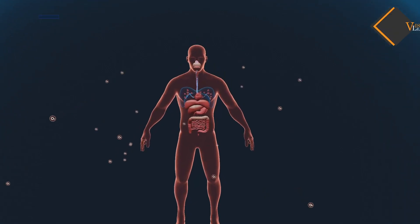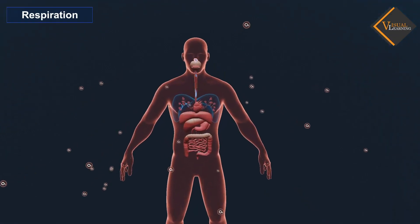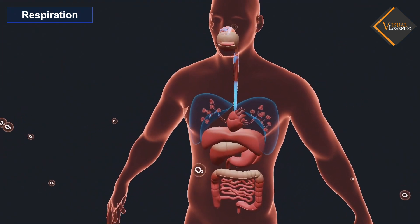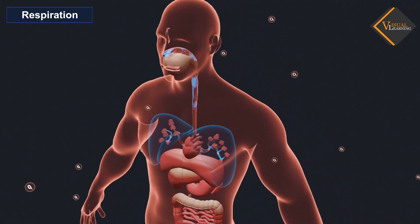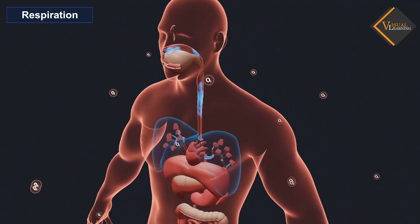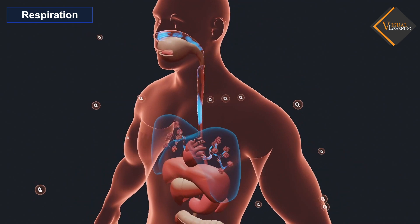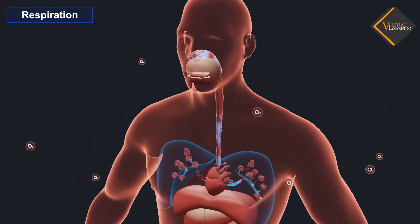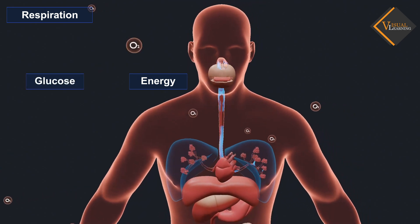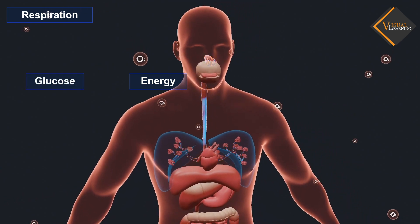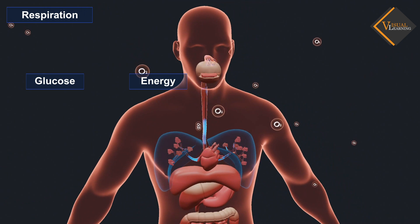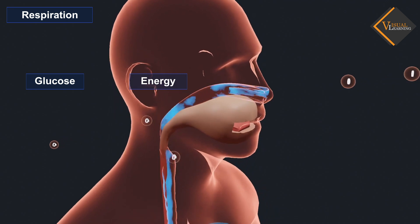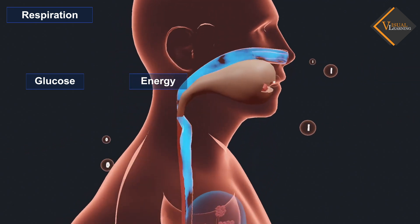In this video, we will understand respiration. Respiration is a metabolic process that occurs in all organisms. It is a biochemical process that occurs within the cells of organisms. In this process, the energy is produced by the breakdown of glucose, which is further used by cells to perform various functions. Let us have a detailed look at the different types of respiration in organisms.